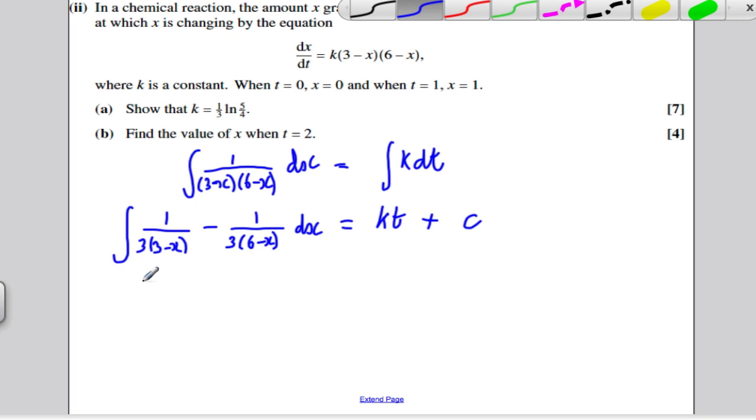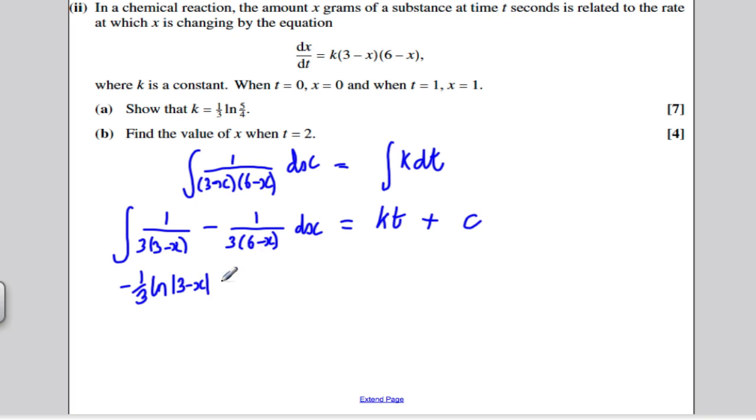So let's integrate this side. This integrates simply to minus 1 third ln(3-x). And this integrates to, this would integrate to minus 1 third ln(6-x), but you've already got a minus. So this becomes plus 1 third ln(6-x) is equal to kt plus c. I might combine all these, I'll factorize out a third, and I'll get ln(6-x) minus ln(3-x), which I combine to be ln((6-x)/(3-x)). And all of that is equal to kt plus constant c.